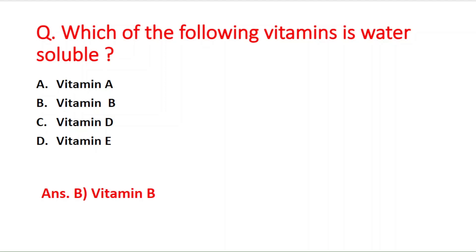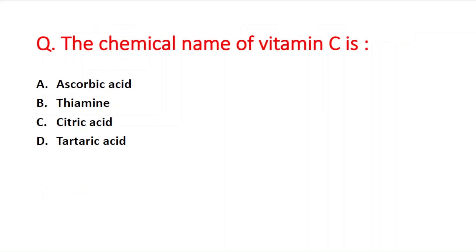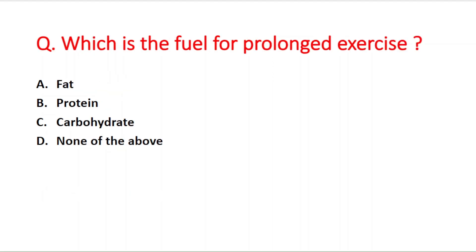Next question: the chemical name of vitamin C is — option A ascorbic acid, B thiamine, C citric acid, D tartaric acid. The chemical name of vitamin C is ascorbic acid. Next question: which is the fuel for prolonged exercise? Option A fat, B protein, C carbohydrate, D none of the above. The right answer is option C — carbohydrate.